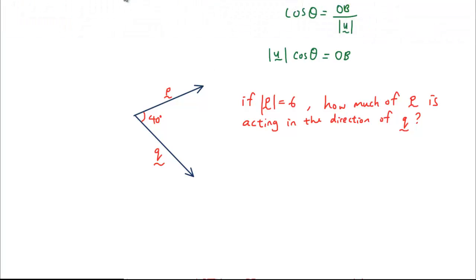So the answer is simply p, the magnitude of p times cosθ, so that's 6 times cos 40. And the answer is 4.6.